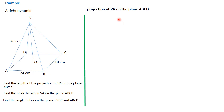The projection of V,A on the plane A,B,C,D. We said earlier that the projection of a line on a plane is the shadow of the line on the plane. Therefore, in this given example, the projection of V,A on A,B,C,D is the line A,O — that shadow there.